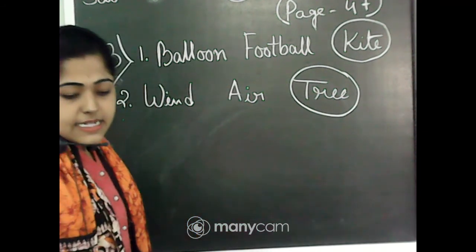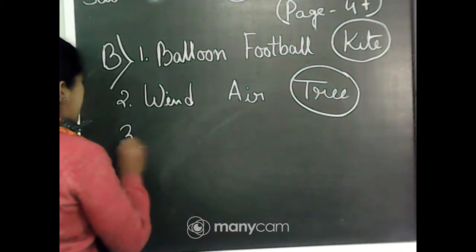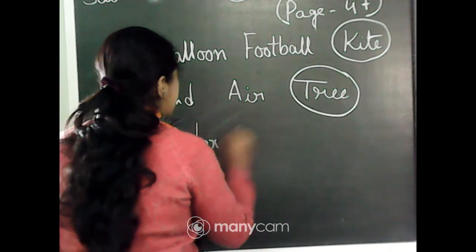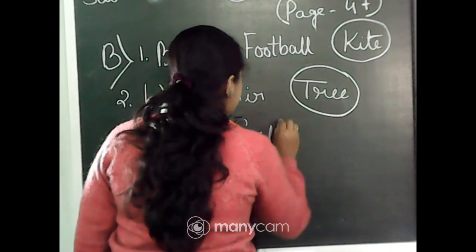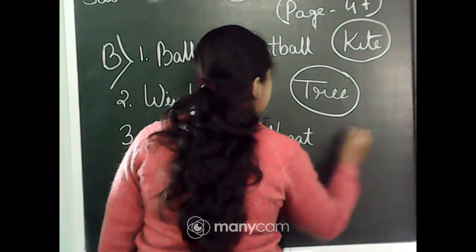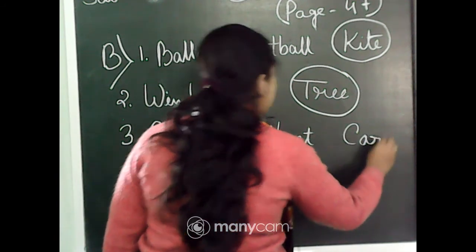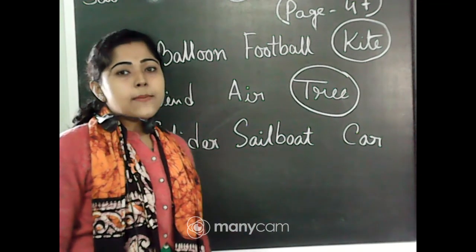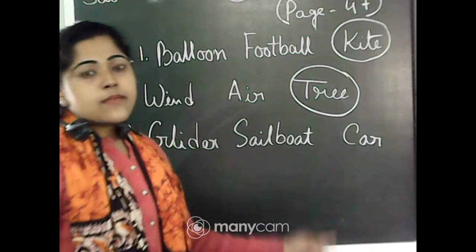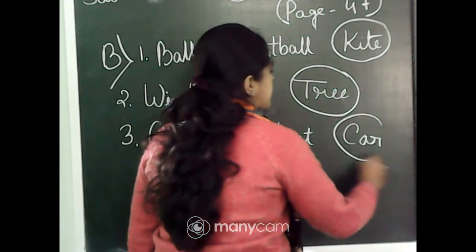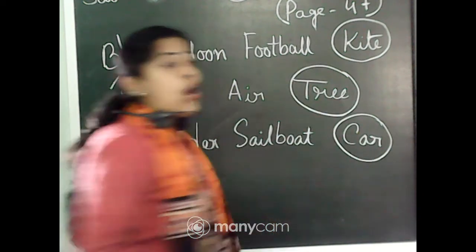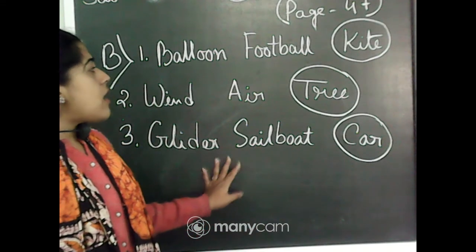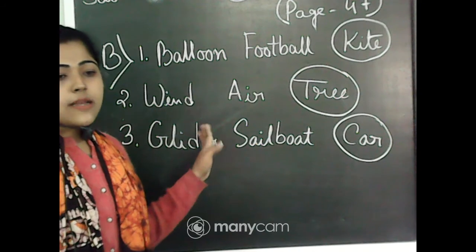Next is glider, sailboat, and car. Glider and sailboat can move with the help of air, but a car does not move with the help of air. So car is the odd one. We have now chosen the three odd ones for Question B.